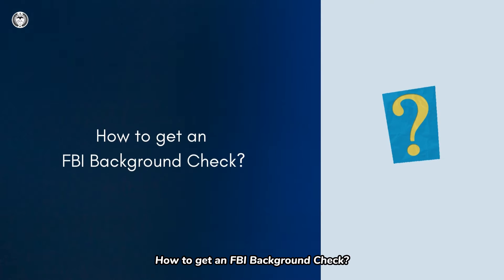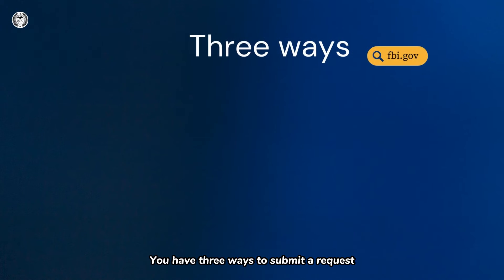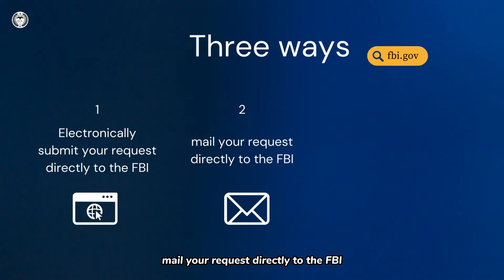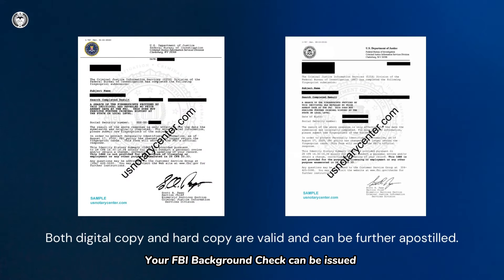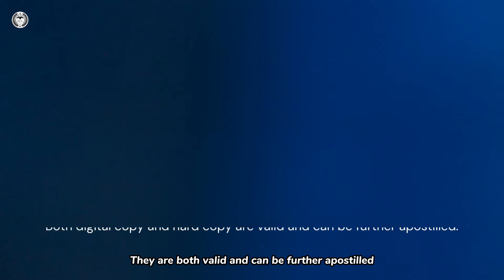How to get an FBI Background Check? You have three ways to submit a request: electronically submit your request directly to the FBI, mail your request directly to the FBI, or turn to an FBI-approved channeler. Your FBI Background Check can be issued in a digital copy, PDF format, or a hard copy. They are both valid and can be further apostilled.